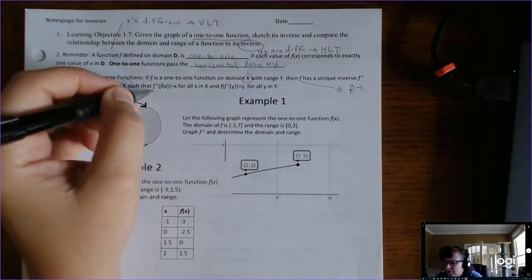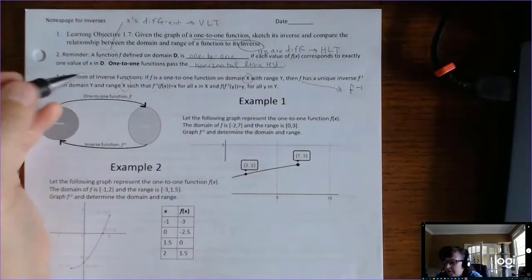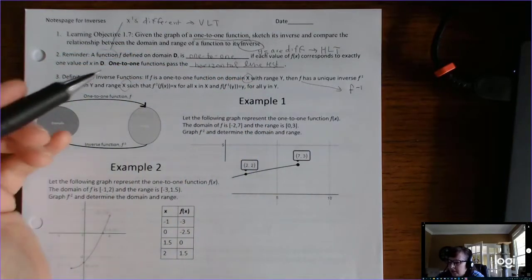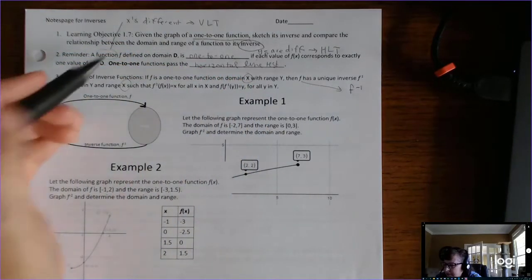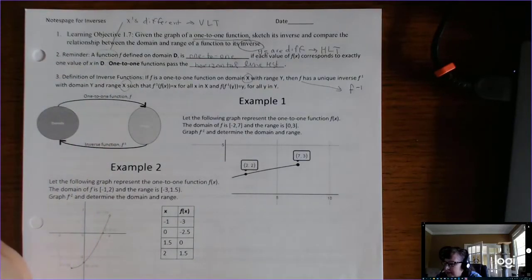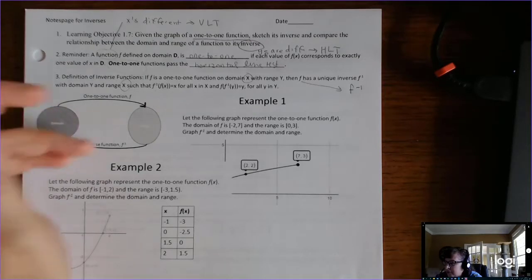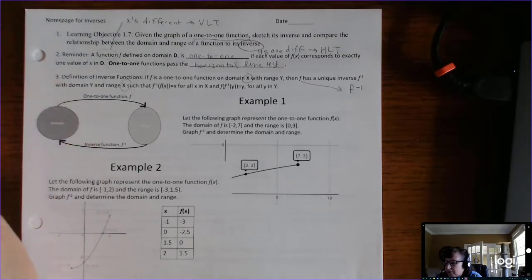You really don't need to know that full definition right now. All you need to know is that only 1-to-1 functions have inverses, and the domain and the range switch. We're going to talk a lot more about that.